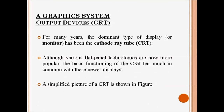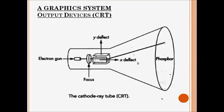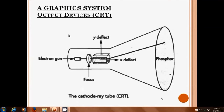Now we are going to discuss output devices used in a graphic system. You can use flat panel displays, CRTs, plasma displays, LCDs, and LEDs. First I will start with the CRT — cathode ray tube — which was used as an output device in early days. Its components include an electron gun, two deflection plates, and a phosphor coating.